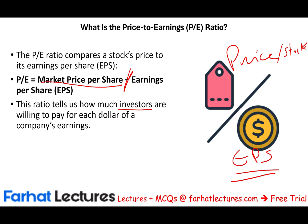For example, if the market price is $15 per share and the company is earning $1 per share, then 15 divided by 1 gives a P/E ratio of 15. This means investors are willing to pay $15 for every $1 in earnings. Whether that's a lot or a little, we'll determine shortly.